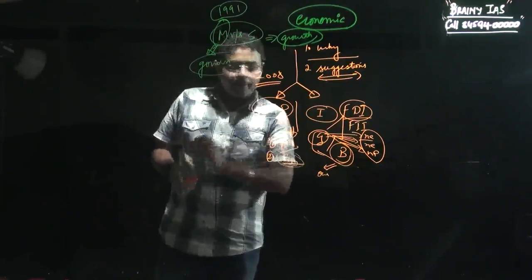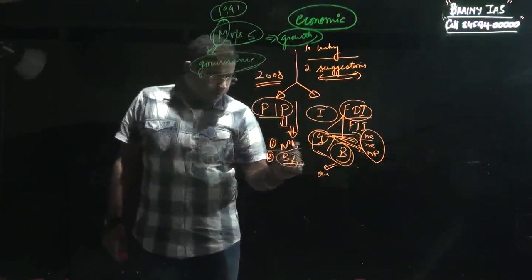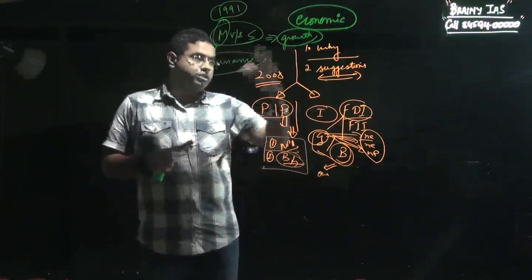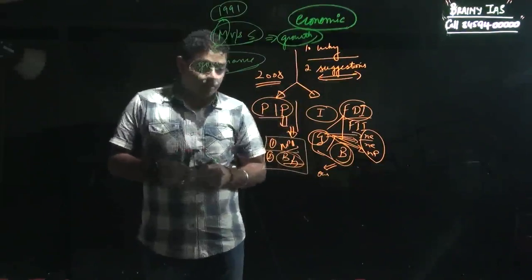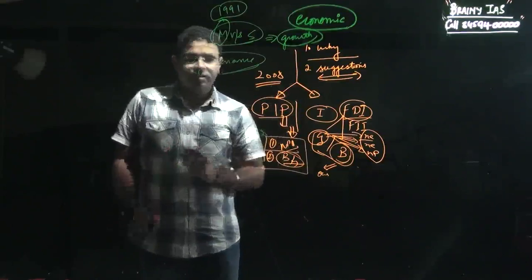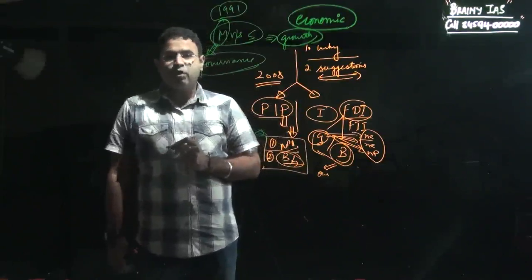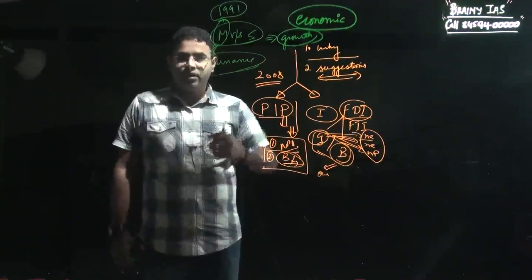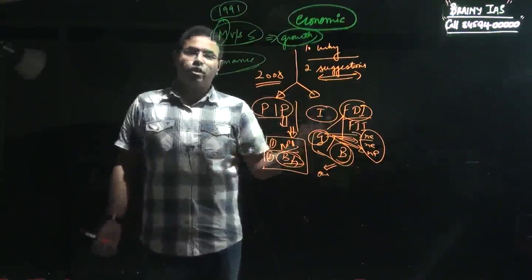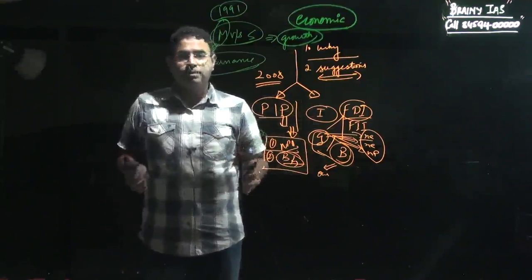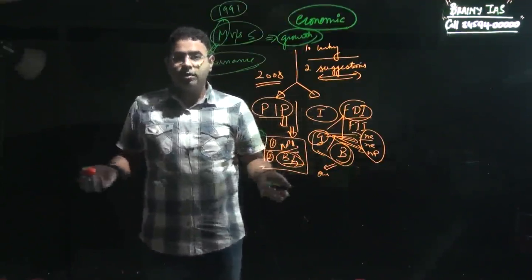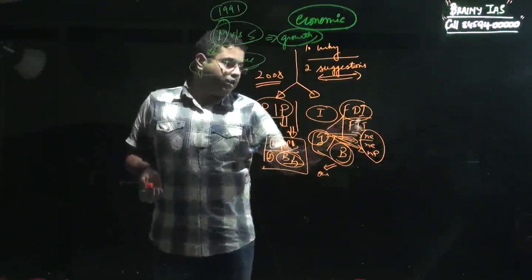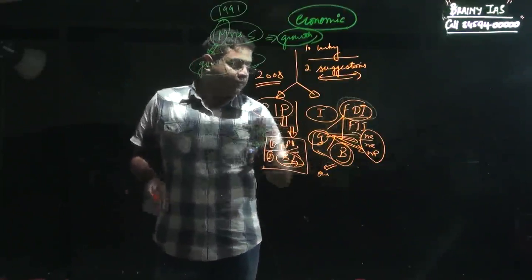Presently we have two challenges that we are facing if we want to arrest this decline. First is that we need to actually work against this NPA, non-performing assets. This will restore the health of the banks, and the banks act as a blood bank for the economy. Without restoring the blood bank of the economy, you cannot make the economy grow. Secondly, we actually need to work out in order to create an effective environment for foreign direct investment.